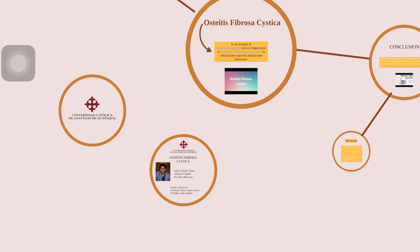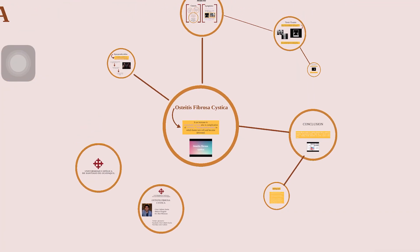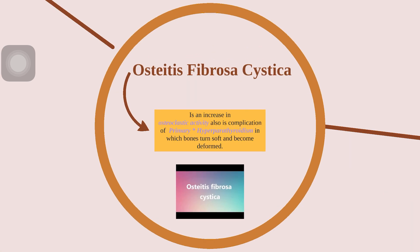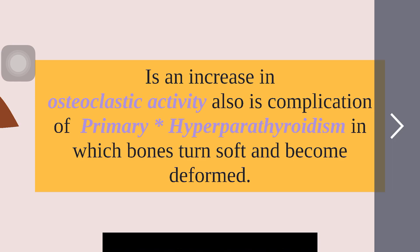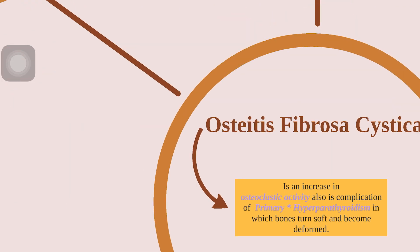First, the definition. Osteitis Fibrosa Cystica is an increase in osteoclastic activity, and it is also a complication of primary hyperparathyroidism in which bones soften and become deformed.